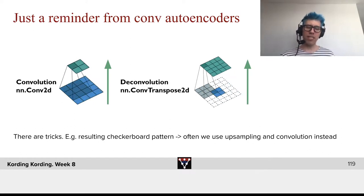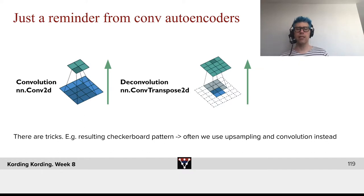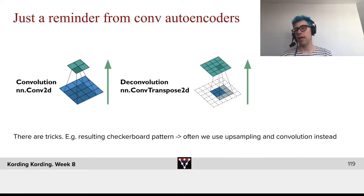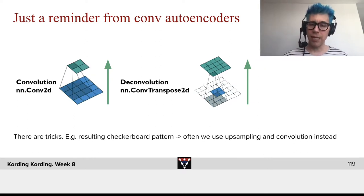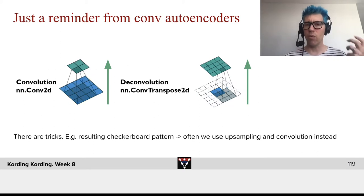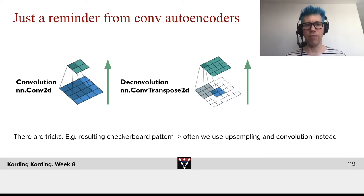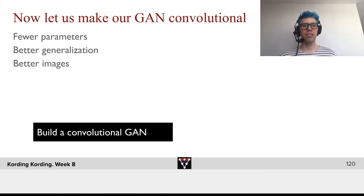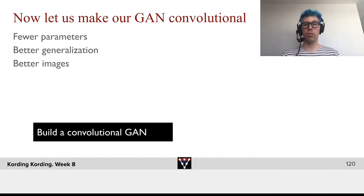Even with this approach, there are tricks. When we use transposed convolutions, we often see checkerboard patterns. There are opportunities to use upsampling and convolutions instead, but those are just details. I want you to really understand the logic of GANs. Let us make our GANs convolutional — it will give us fewer parameters, better generalization, and in general better images. Build a convolutional GAN.